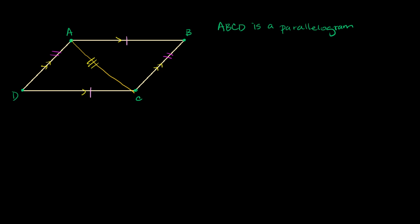We can say triangle ADC is congruent to triangle CBA. I'm matching the double magenta slash first, then the pink, then the last side — so CBA. This is by side-side-side congruency: all three sides have three corresponding sides that are congruent to each other, so the triangles are congruent, meaning their areas are equal.